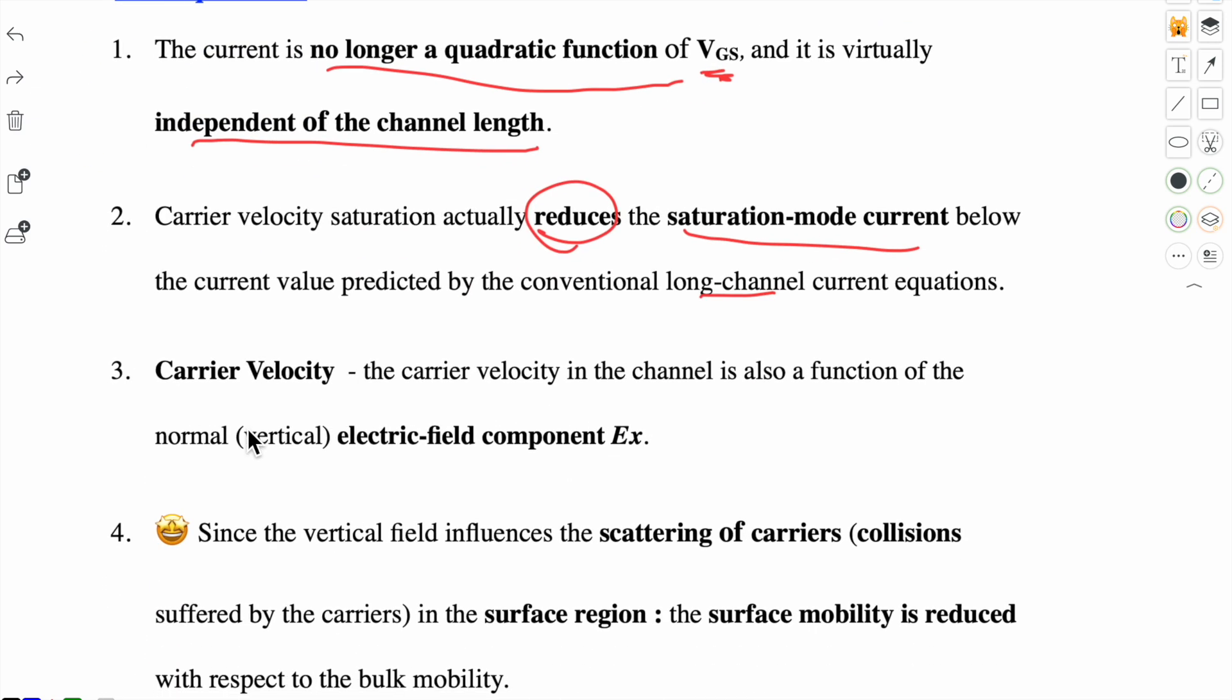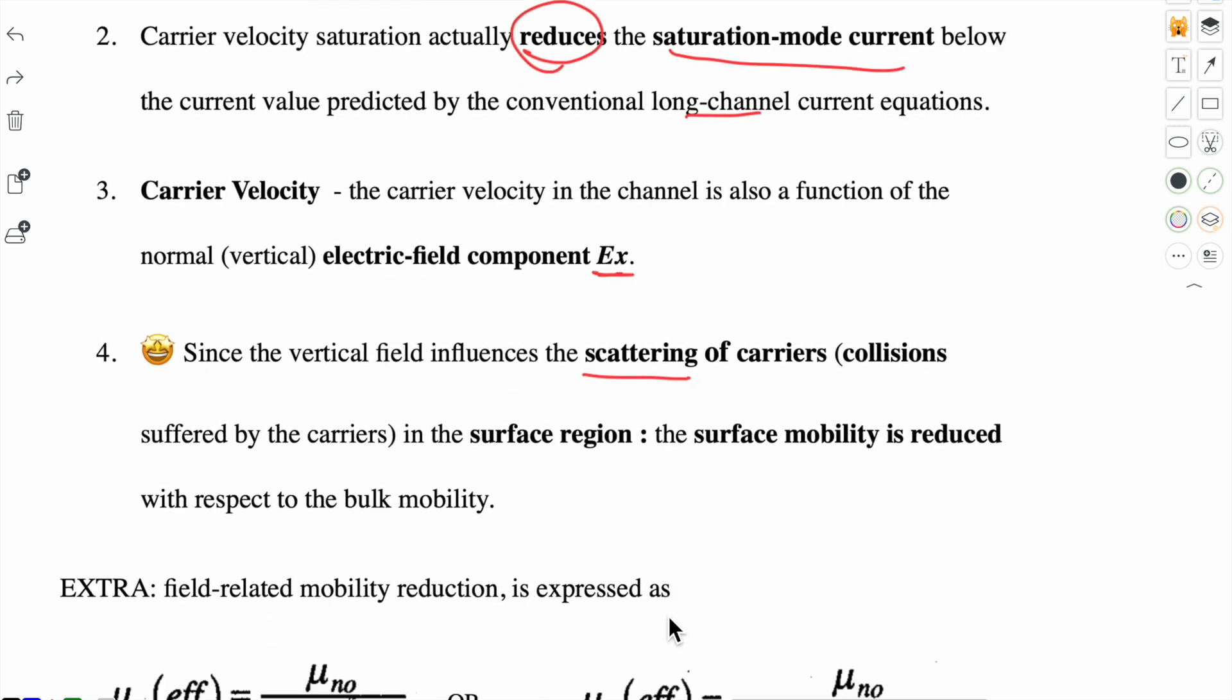Third, the carrier velocity in the channel is also a function of the normal electric field component E_x. Since the vertical field influences the scattering of carriers, the surface mobility is reduced with respect to the bulk mobility, nearly half in comparison to bulk mobility.